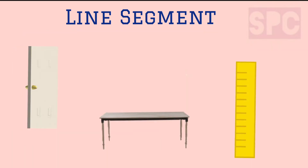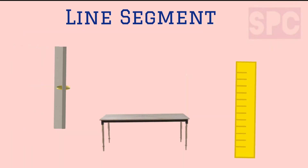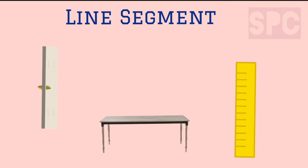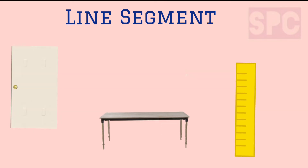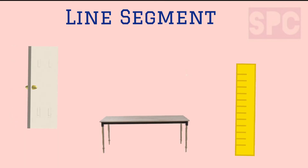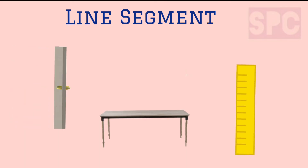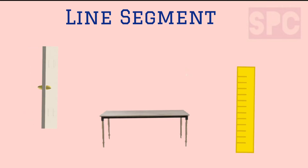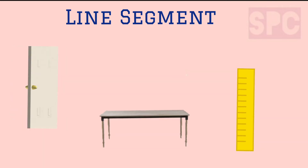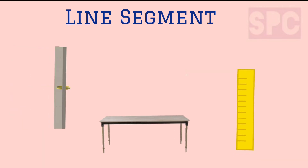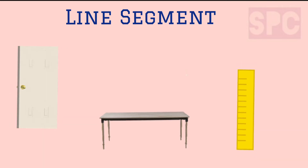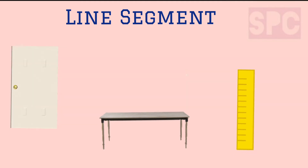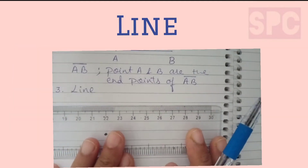You can see many examples of line segments in your house, like the edges of the table, edges of the door, and edges of the ruler. These are all examples of line segments.